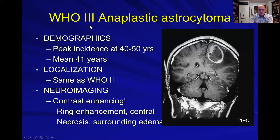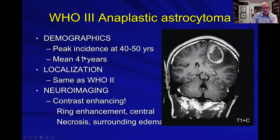Here's a grade 3 tumor — this is your typical anaplastic astrocytoma. These occur in a slightly older population; the average age is now up in the 40s.